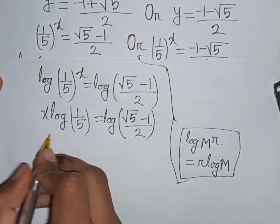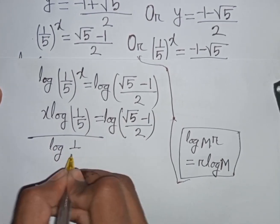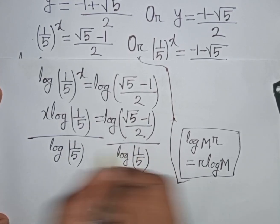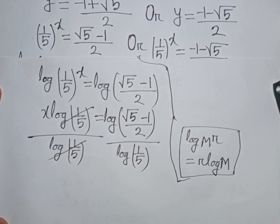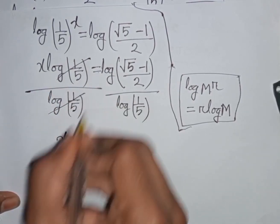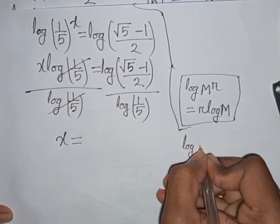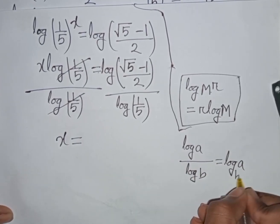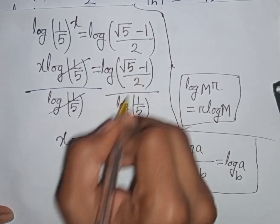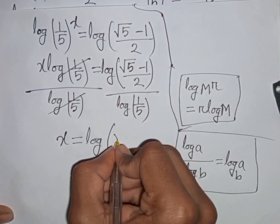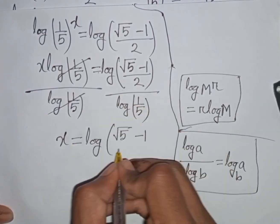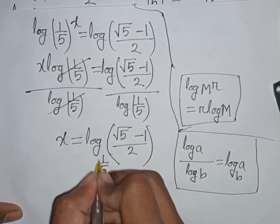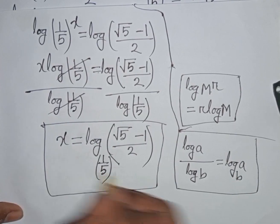So x · log(1/5) = log[(√5 - 1)/2]. We need the value of x, so divide both sides by log(1/5). Using the change of base rule, log(a)/log(b) = log_b(a), we get x = log base(1/5) of [(√5 - 1)/2]. This is our final answer.